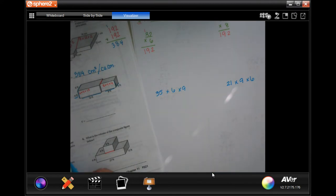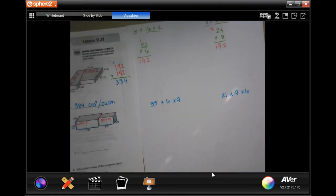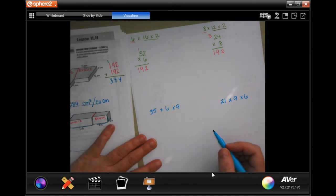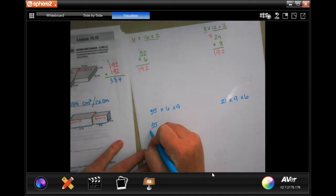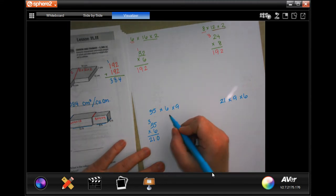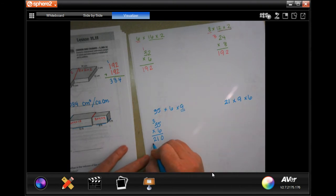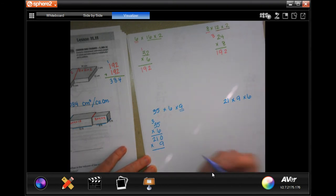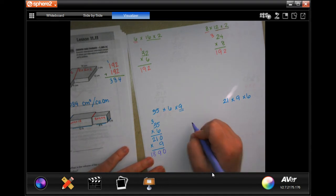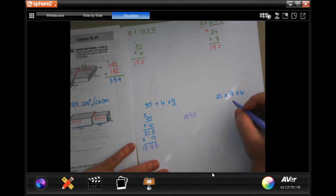The other one says it's 30 across, but I already took up 9 of that, so it's going to be 21 by 9 by 6. I'm just going to do those two and then add them together. 35 times 6: 6 times 5 is 30, carry the 3. 6 times 3 is 18 plus 3 is 21. Now I need to multiply that by 9.